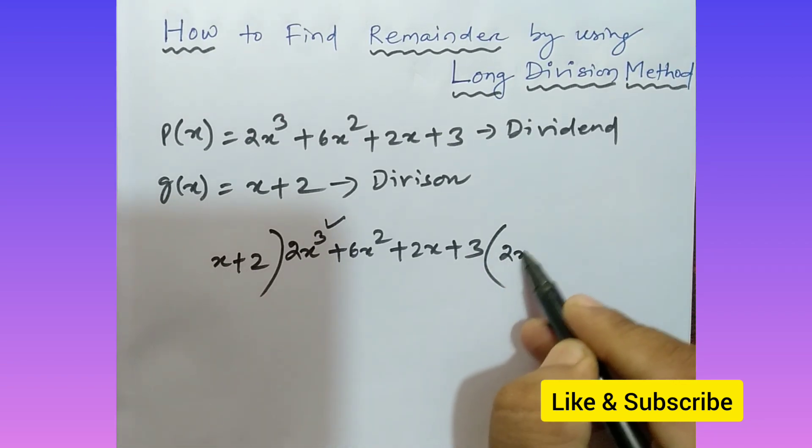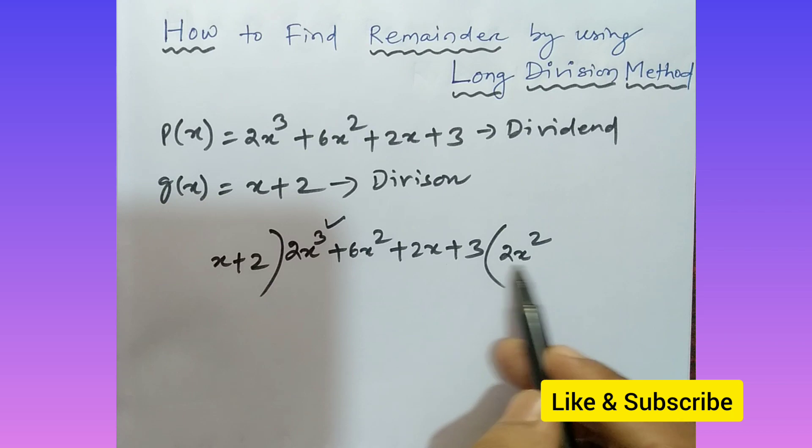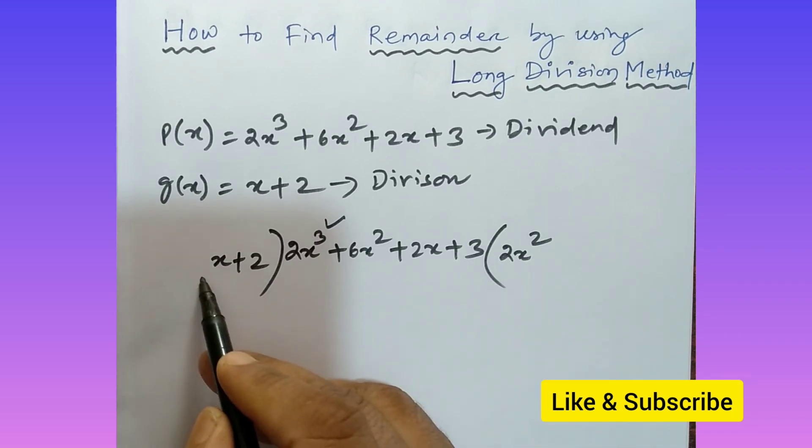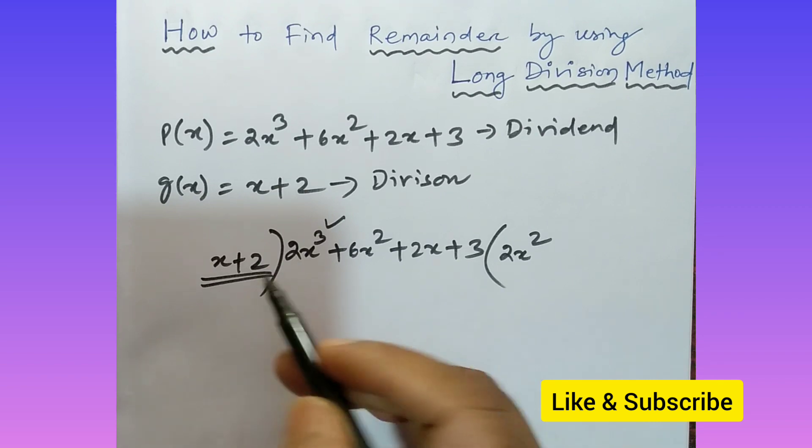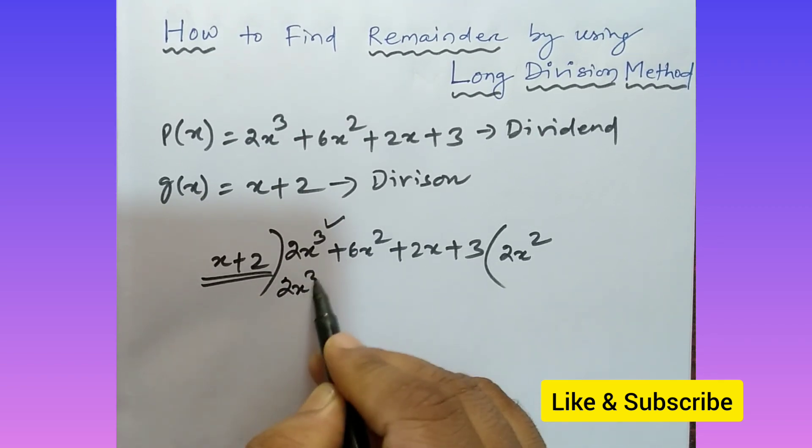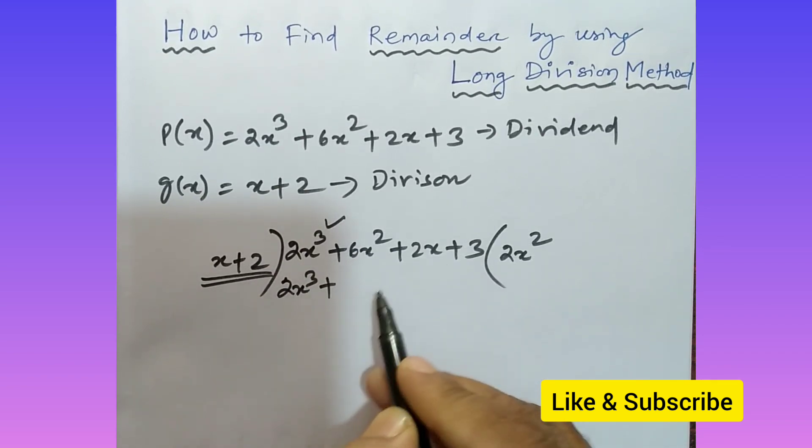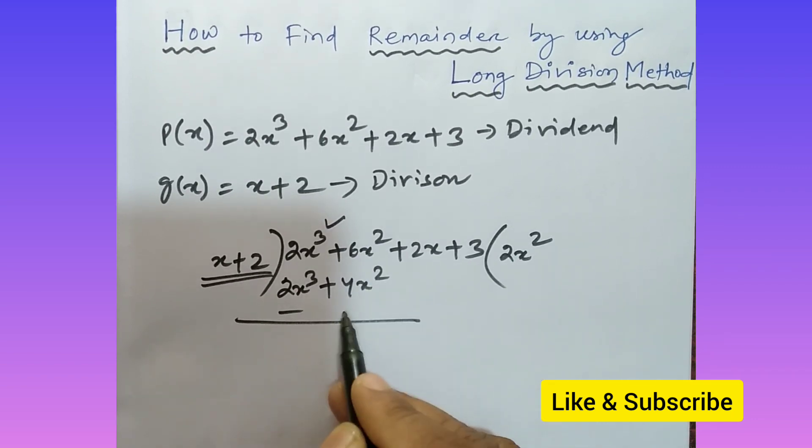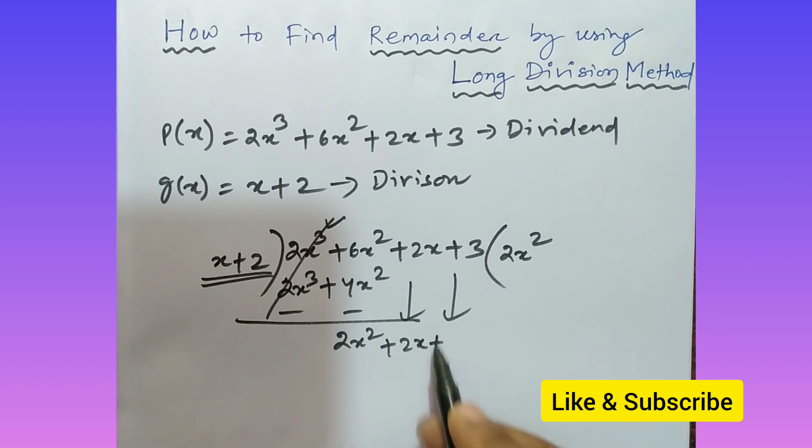So here you put 2x² in the quotient. Now multiply this 2x² with the whole divisor. What are you getting? You're getting 2x³ plus 4x². Then subtract: minus minus cancellation, so 6x² minus 4x² is 2x². Drop down the next terms: plus 2x plus 3.